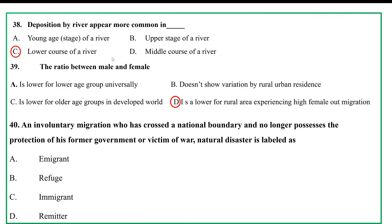This is an involuntary migration across the national boundary where a person no longer possesses the protection of his former government or is a victim of natural disasters. The protection of the country is relevant to addressing this situation.